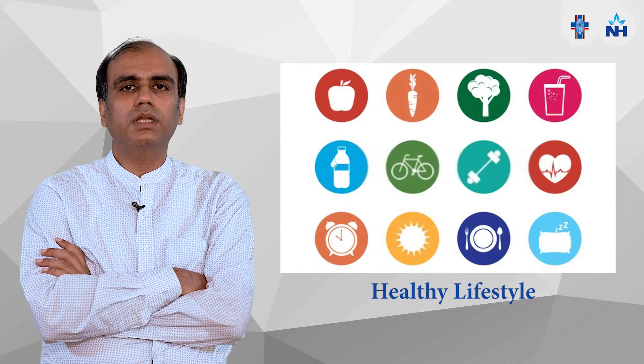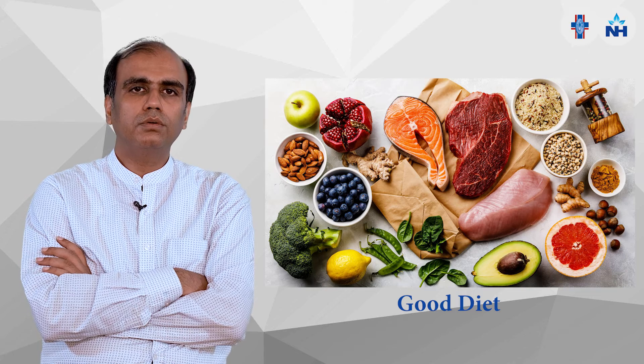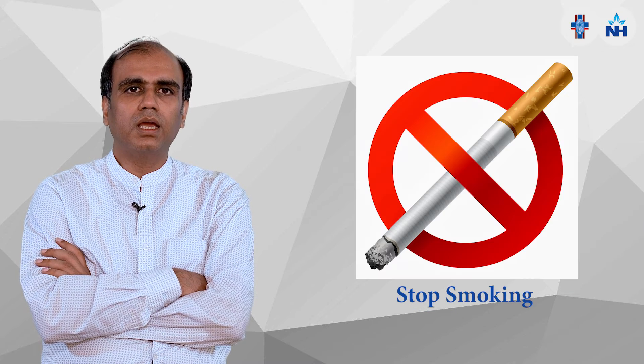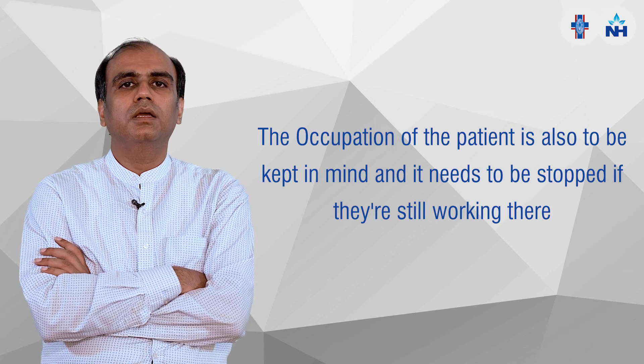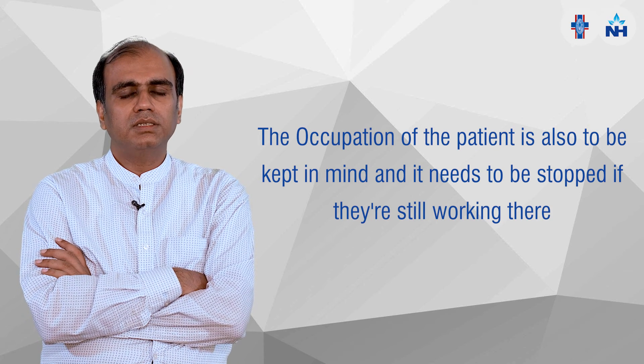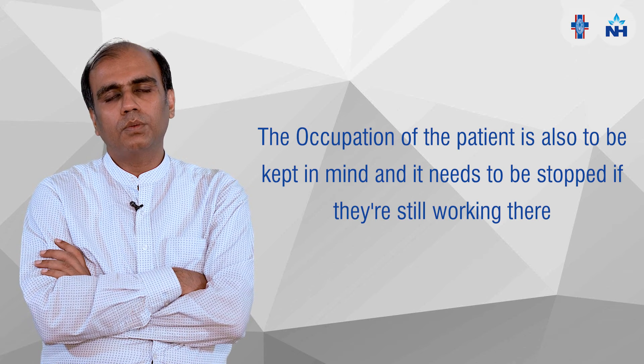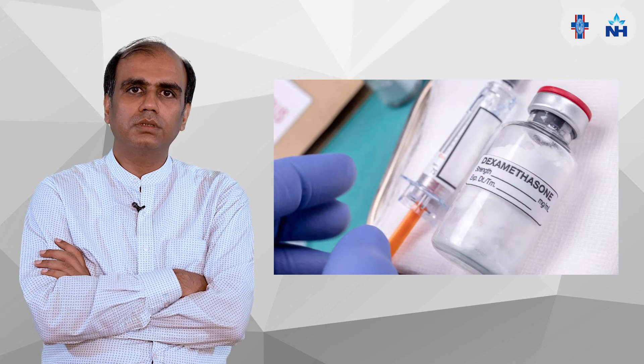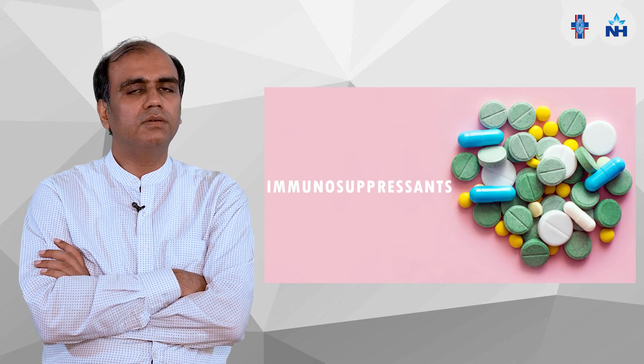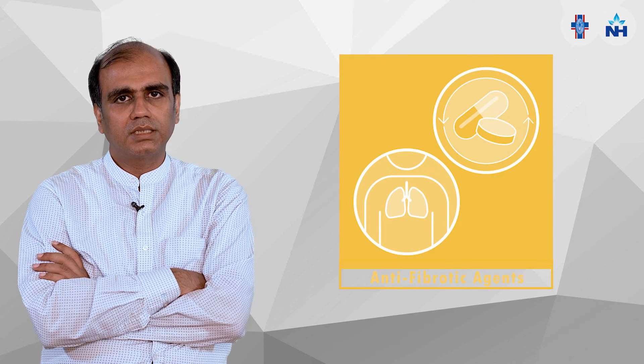Treatment basically starts with lifestyle modification. We have to take a good diet, stop smoking and alcohol, and assess the occupation of the patient. If occupation is the cause, we have to remove that cause. There are drug treatments — three types of drugs: the first is the steroid group, the second is immunosuppressants, and the third is anti-fibrotic agents.